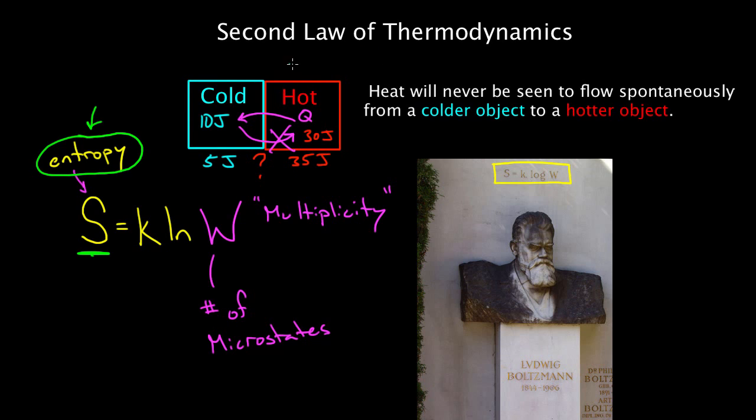Because it allows us a third way to state the second law, which is that the total entropy of a closed system will always be seen to increase. Technically, if it's a reversible process, the entropy could stay the same. But honestly, for all real-world processes, the entropy is going to increase for a closed system, which is to say that the disorder increases.